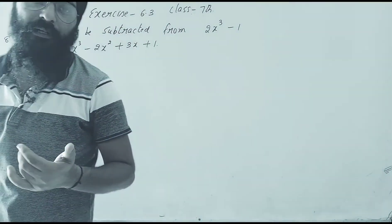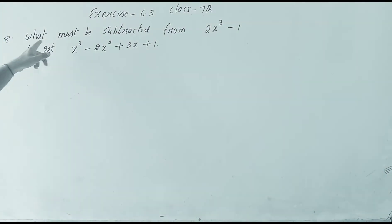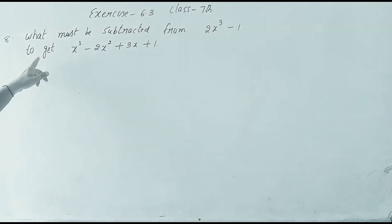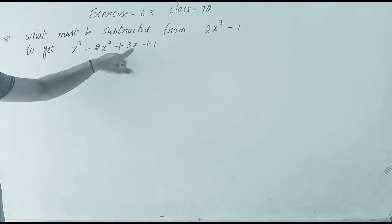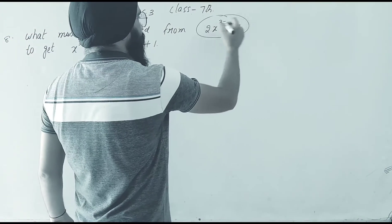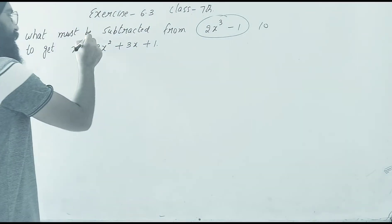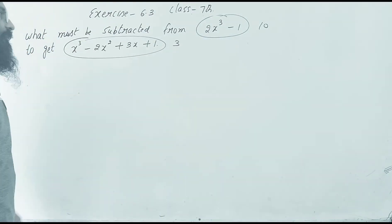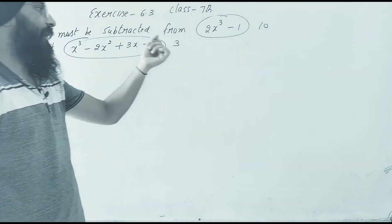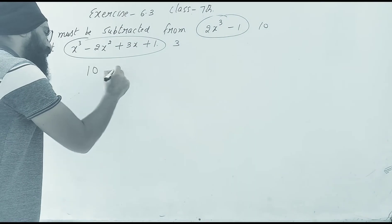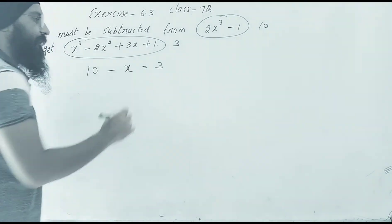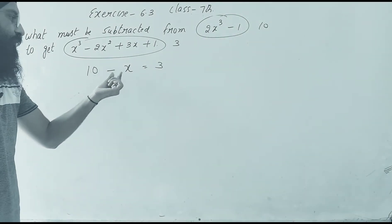Next question, number 8: what must be subtracted from 2x³ - 1 to get x³ - 2x² + 3x + 1? Simple question. Think of it like: what must be subtracted from 10 to get 3?